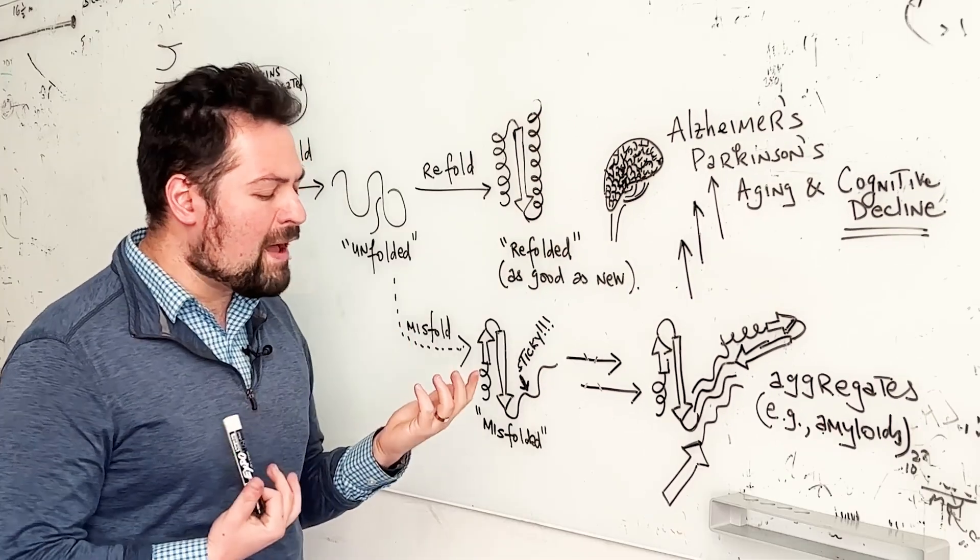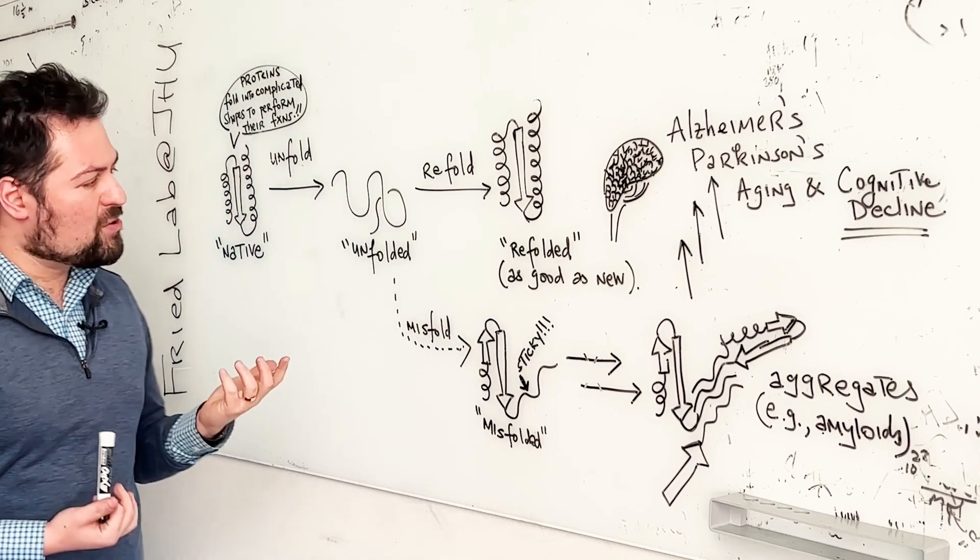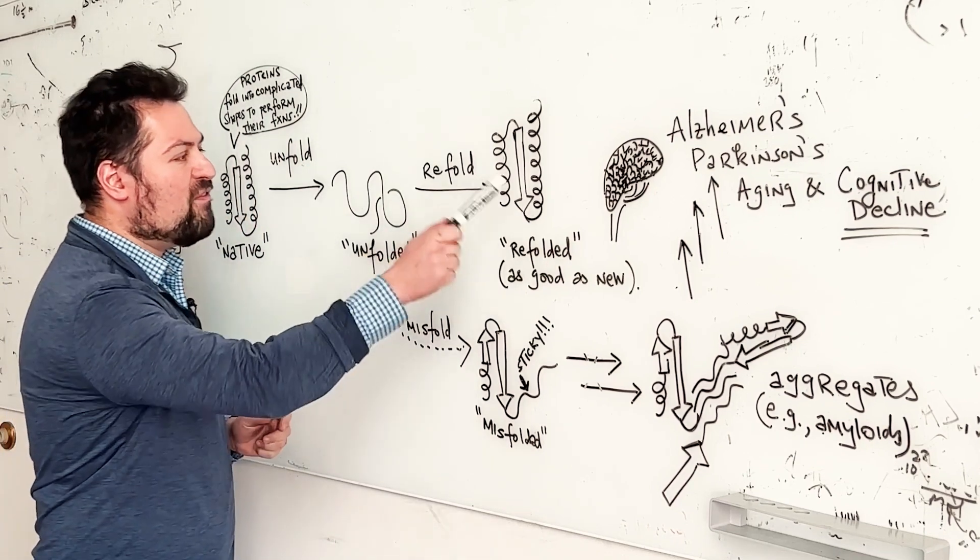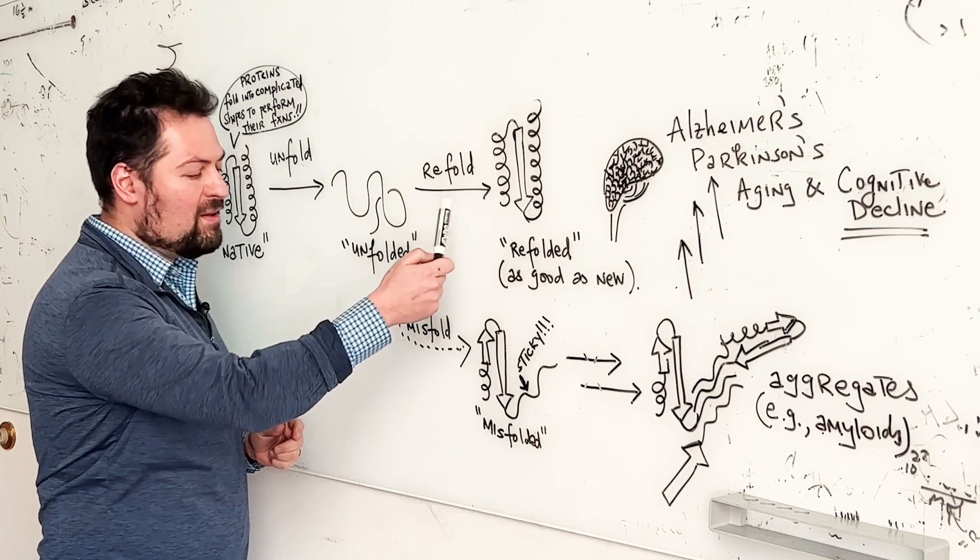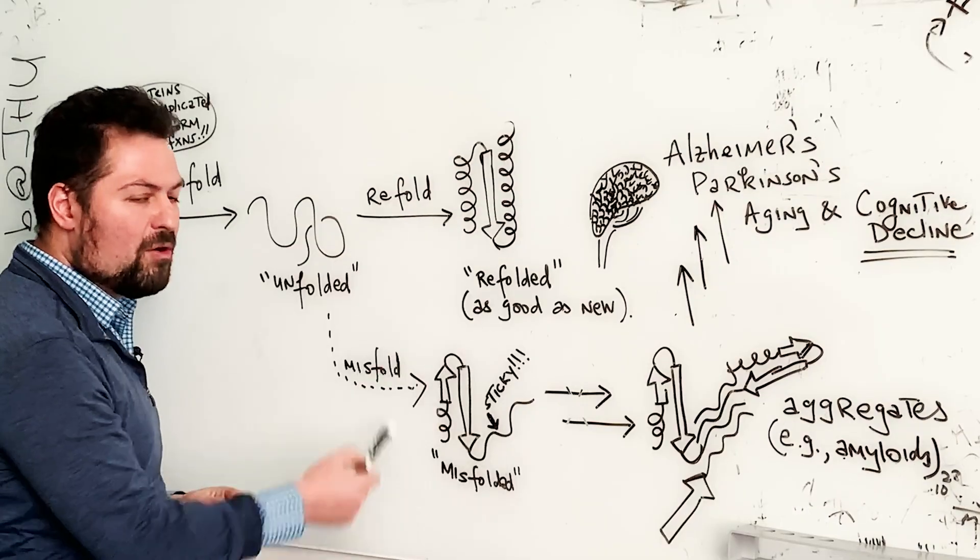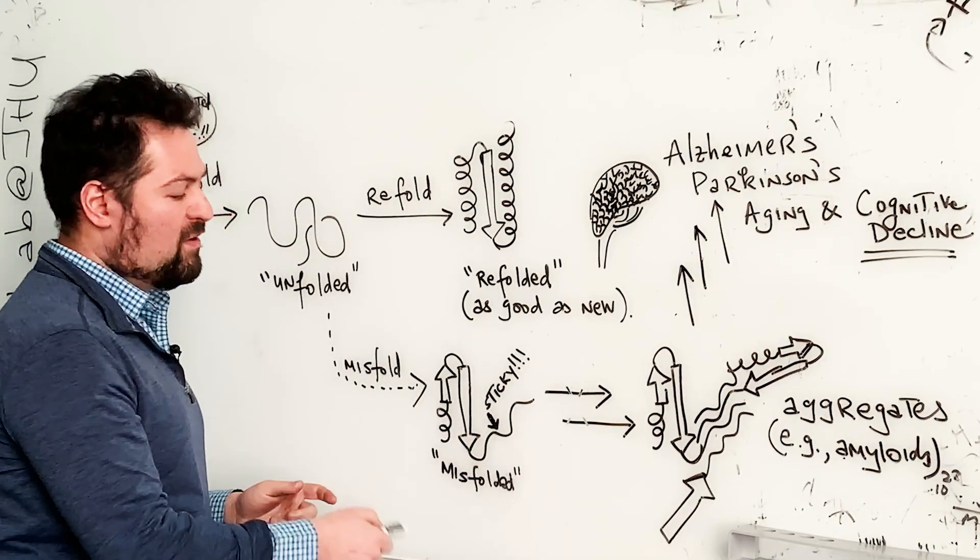So in our lab, we're really interested in asking a fundamental question: which proteins are good at following the rules and refolding, and which ones are more prone to forming these misfolded states?